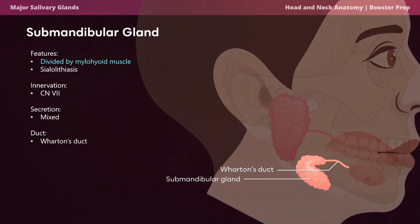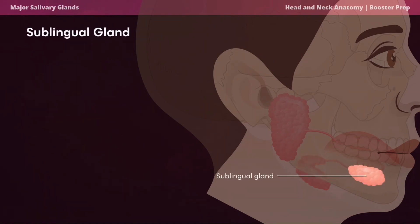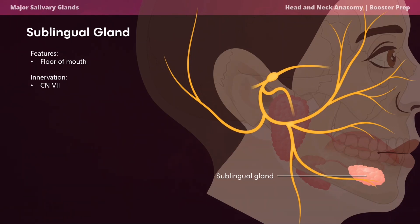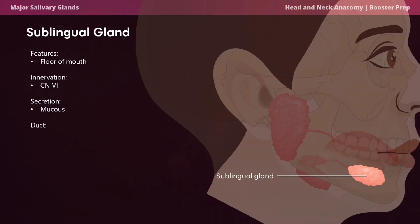The duct of the submandibular gland is Wharton's duct, which courses around the posterior aspect of the mylohyoid muscle and superomedially toward the floor of the mouth on either side of the lingual frenulum. The sublingual gland is the smallest major salivary gland, found in the floor of the oral cavity between the geniohyoid, hyoglossus, and mylohyoid muscles, bordered laterally by the mandible. It contributes minimally to saliva production, lacks striated and intercalated ducts, shares innervation with the submandibular gland via cranial nerve 7, and is mostly mucous acini secreting mucins. Its duct is Bartholin's duct, which joins Wharton's duct and drains into the oral cavity by the lingual frenulum.